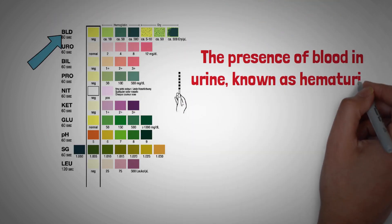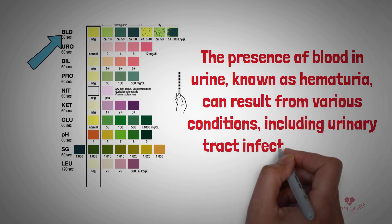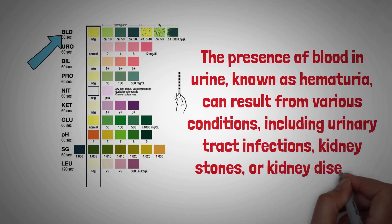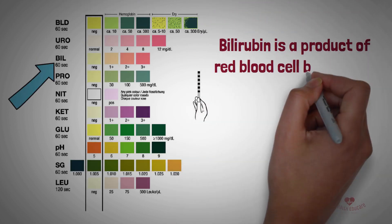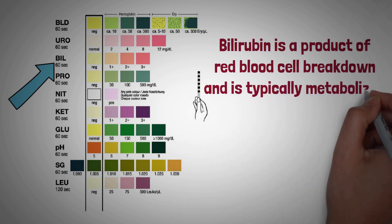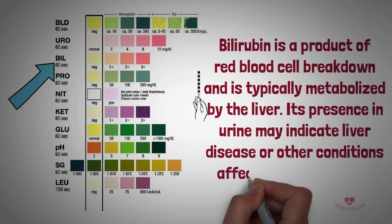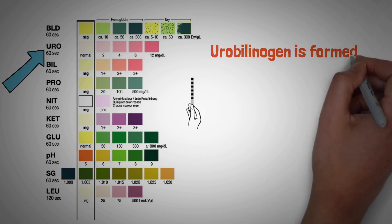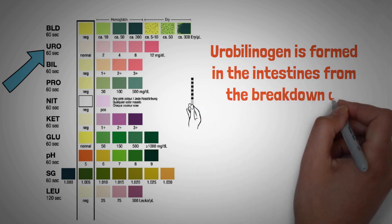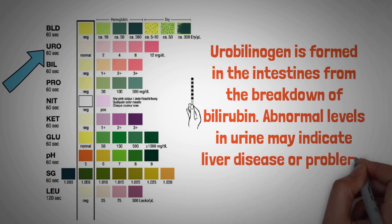The presence of blood in urine, known as hematuria, can result from various conditions including urinary tract infections, kidney stones, or kidney disease. Bilirubin is a product of red blood cell breakdown and is typically metabolized by the liver; its presence in urine may indicate liver disease or other conditions affecting liver function. Urobilinogen is formed in the intestines from the breakdown of bilirubin, and abnormal levels in urine may indicate liver disease or problems with red blood cell breakdown.